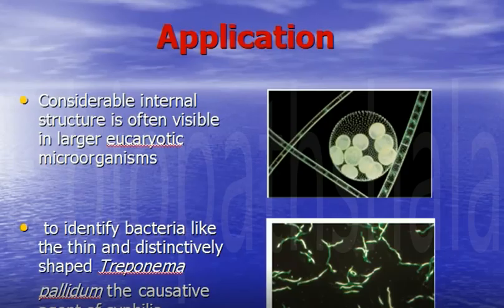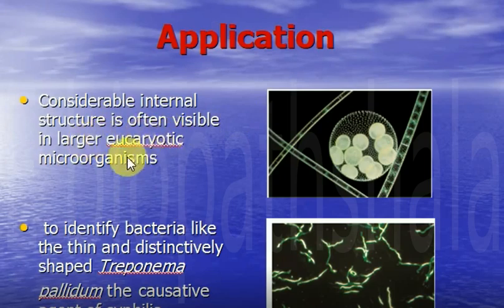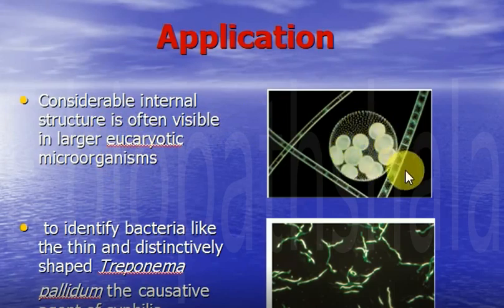Now we will see the applications of the dark-field microscope. The internal structures of some larger eukaryotic microorganisms can be seen under the dark-field microscope. We can see here the internal organs of the volvox and the internal organs of the spirogyra.